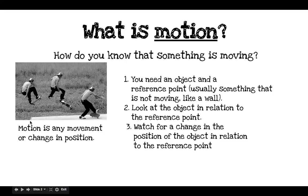What you do is look at the object in relation to the reference point. Here's our starting point of our object, and then he's in a different position, so we can tell that he is in motion. He's moved from here to here, and then now he's down here on the ground. We're watching for a change in position of the skateboarder in relation to the reference point, this slab.